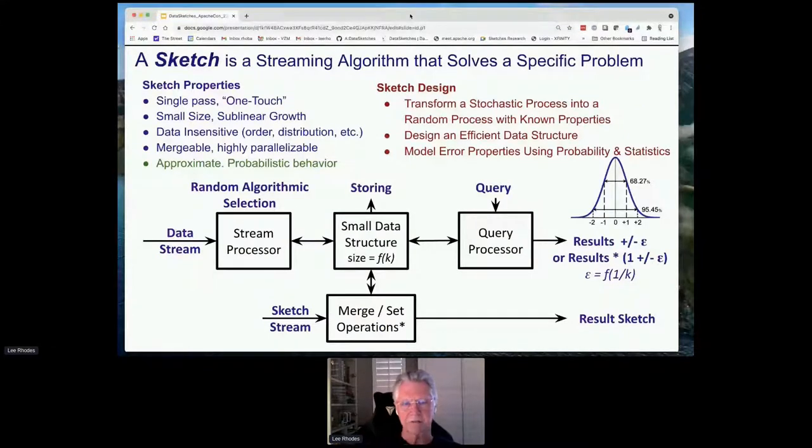A sketch itself is a streaming algorithm that solves a specific problem. It's like sampling, but not always the same. Some sketches are a form of sampling and others use different algorithms. Sketch properties are: it's single pass, one touch through the data. They're small, very small in size and sublinear in growth. As the stream grows larger, the growth is usually only logarithmic or sublogarithmic, so they stay small as the stream can grow tremendously.